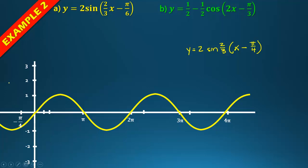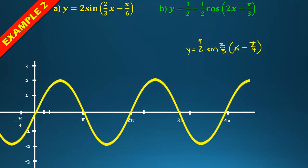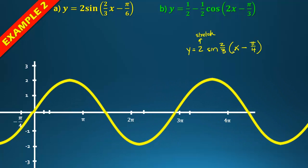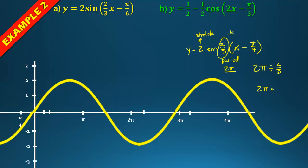Graphing this: the 2 doubles the amplitude. For the period, 2π divided by 2/3 means multiplying by 3/2 — the 2s cancel, leaving a period of 3π. It takes from 0 to 3π to complete one full cycle. The minus π/4 means we shift the graph right by π/4.